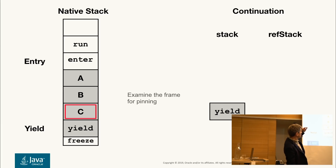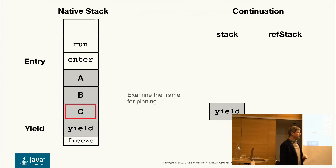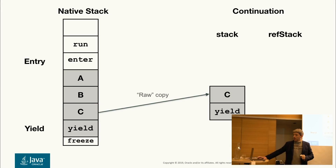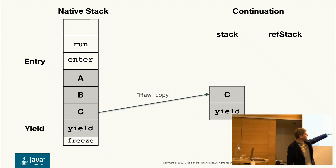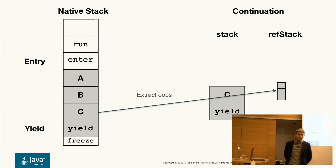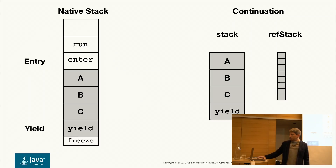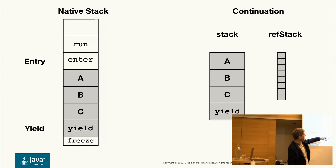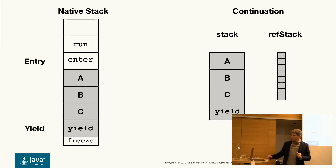If it isn't pinned, freeze continues copying the frames. First it copies the frame as-is with all the references into the stack array, and the reference array — called ref stack — is the object array. Then it extracts the oops from each frame and copies them to the reference stack. It does that for all frames. We recently changed the order so it copies in the other direction, but the same idea. Then freeze jumps back to run.